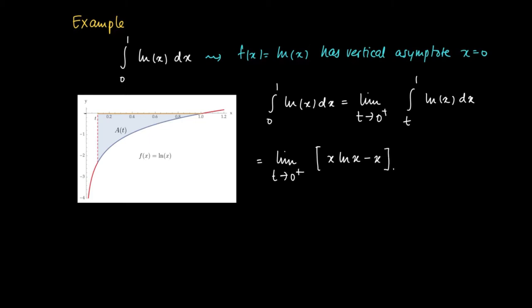And this one goes between the boundaries t and 1, so that when we use these two integration bounds, we see that this equals the limit for t to 0 plus of the upper value 1. So 1 times the ln 1 minus 1 minus t substituted for x. So we get t ln t minus t.